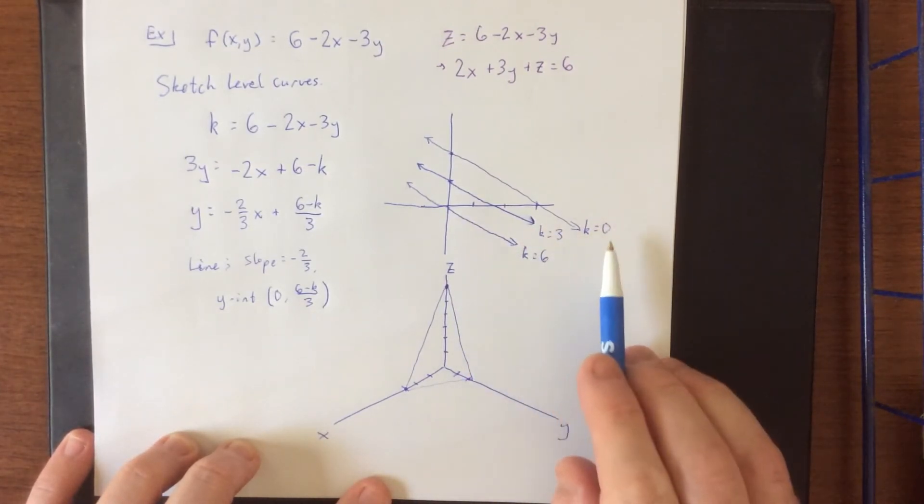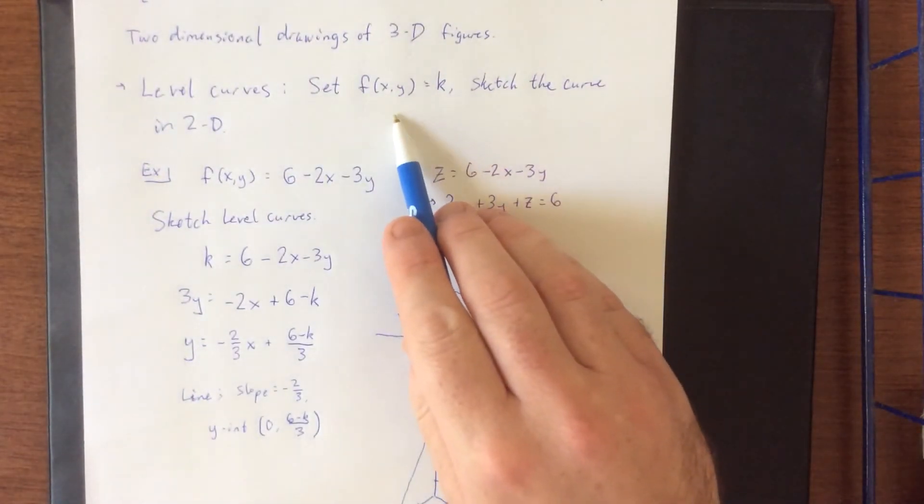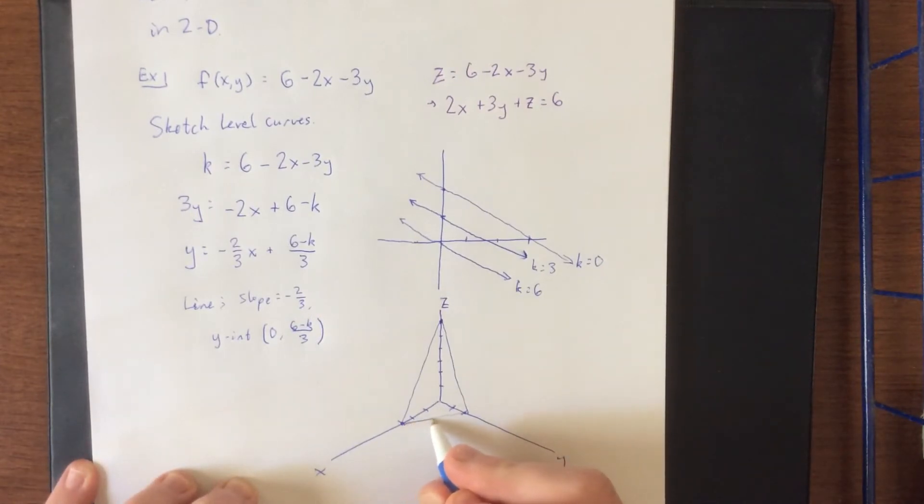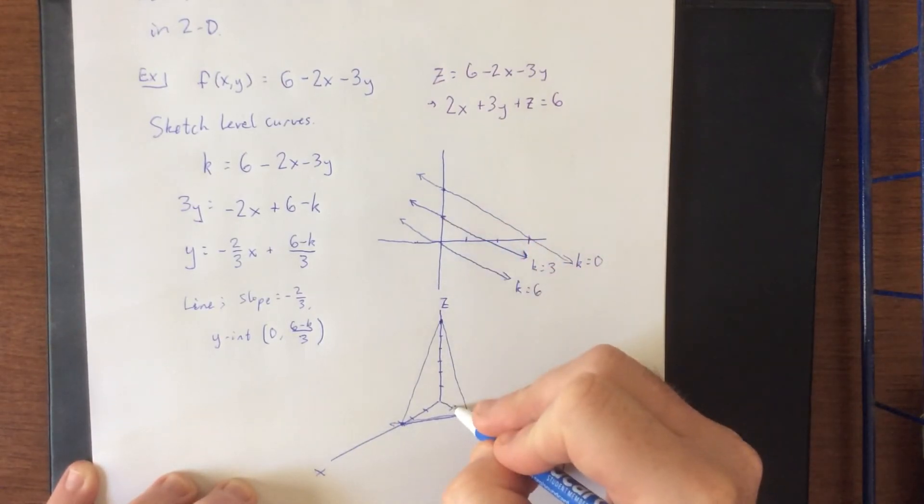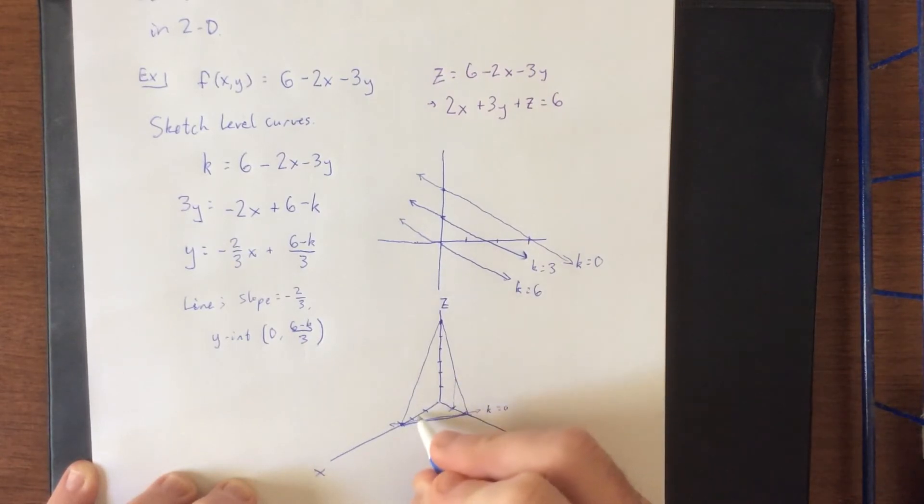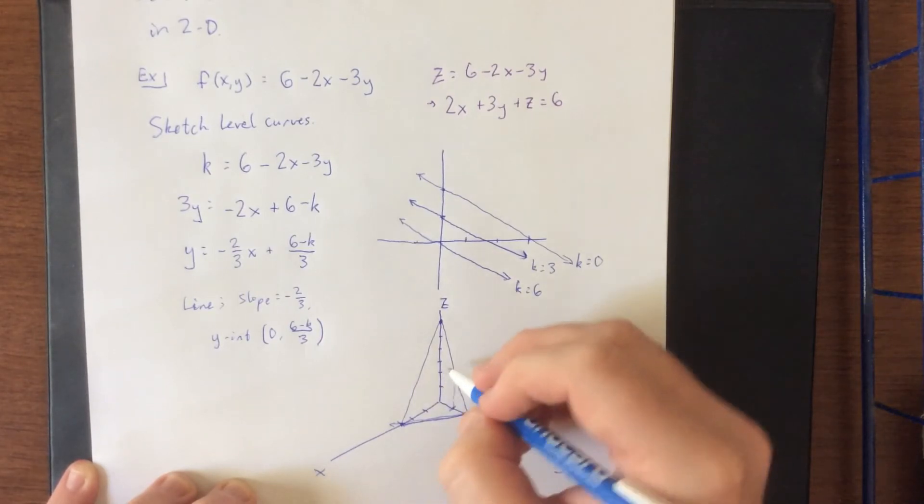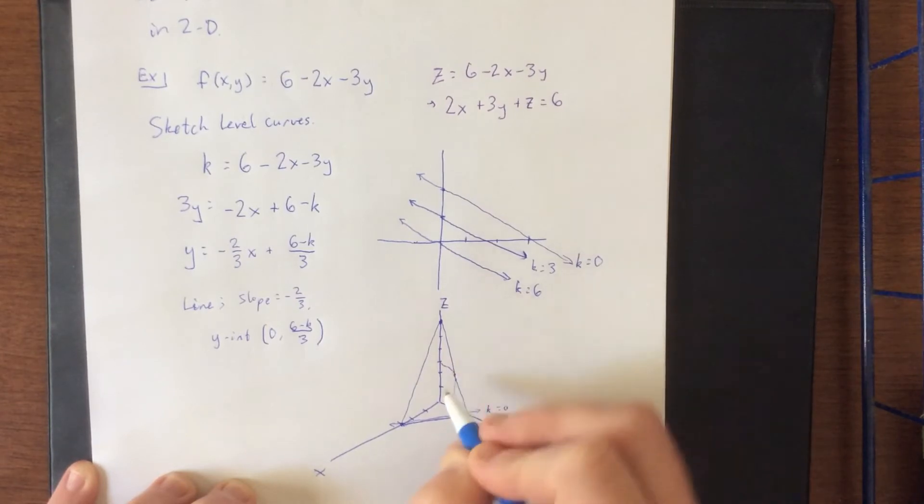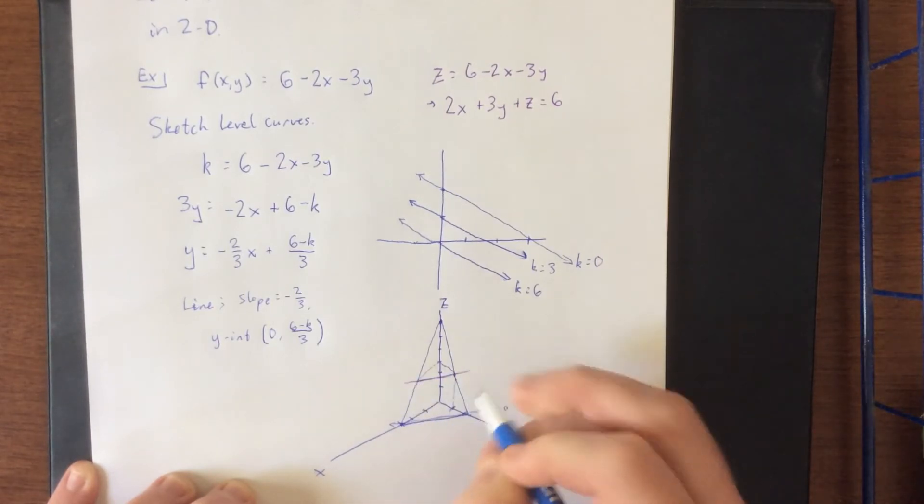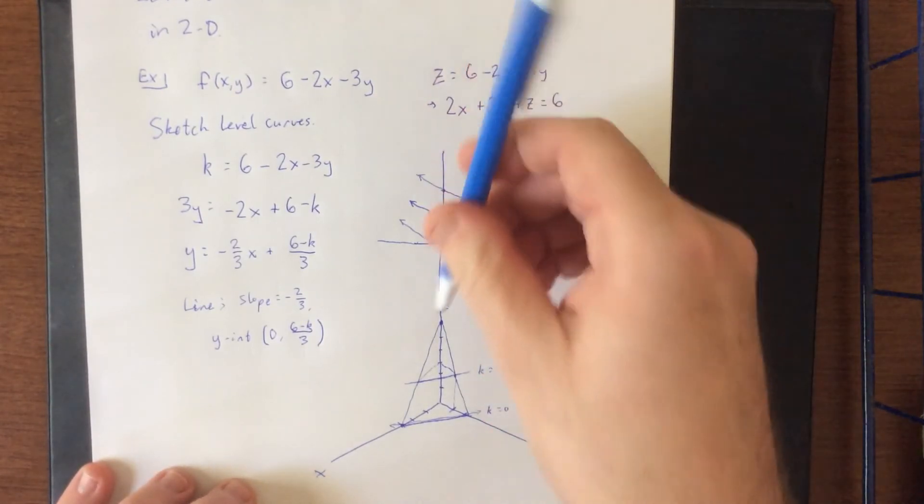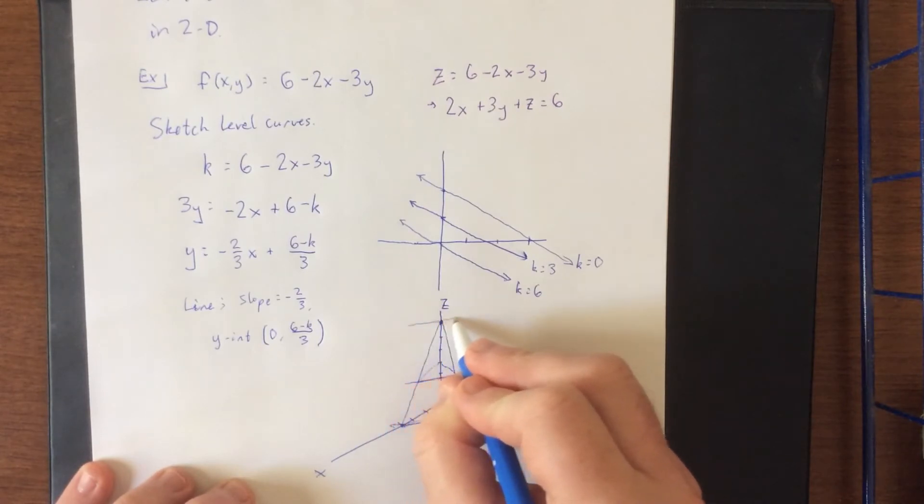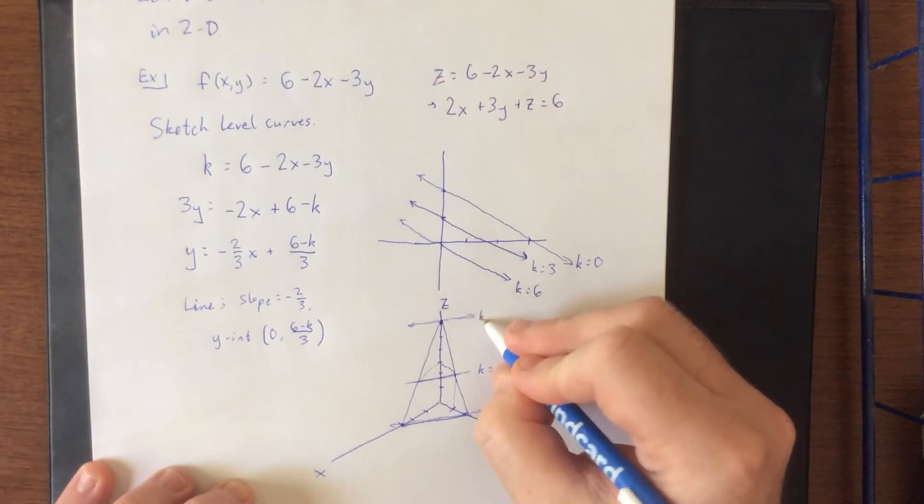Now, how that corresponds to these level curves here, if k is equal to 0, what we're really saying is that our z-value is equal to 0. So, k equals 0 would correspond to what we see within the x-y plane. That would be this line right here. Then, as we go up a little bit, you'll notice that the y-value diminishes to 1, and the x-intercept would be 1.5. That k equals 3 actually corresponds to a z-value of 3. And going parallel to each of those axes, this little portion right here would correspond to k is equal to 3. Then, k equals 6 actually passes through the origin, as it were, and looking from above, that would be this right here.